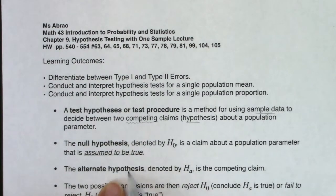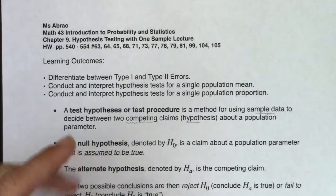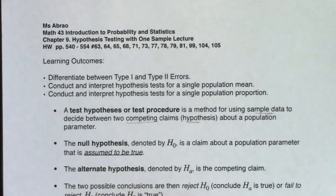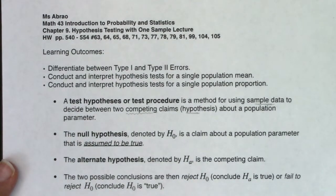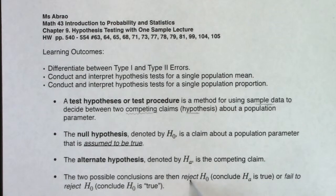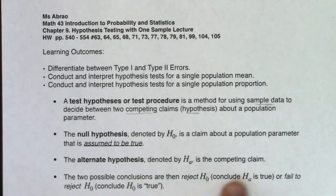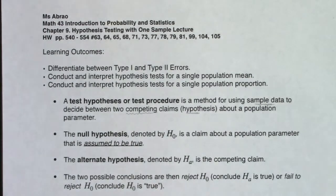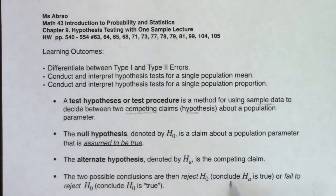Competing with it will be the alternate, denoted by H sub a — that's going to be a competing claim. There are actually going to be 13 steps we're looking at, which I know can sound overwhelming initially. But at the end of all of this — in step 13 — you're either going to say: I reject H naught, or I fail to reject H naught. In parentheses, that means you're either concluding the alternate is true, or concluding H naught is true — more on those quotes in a bit.